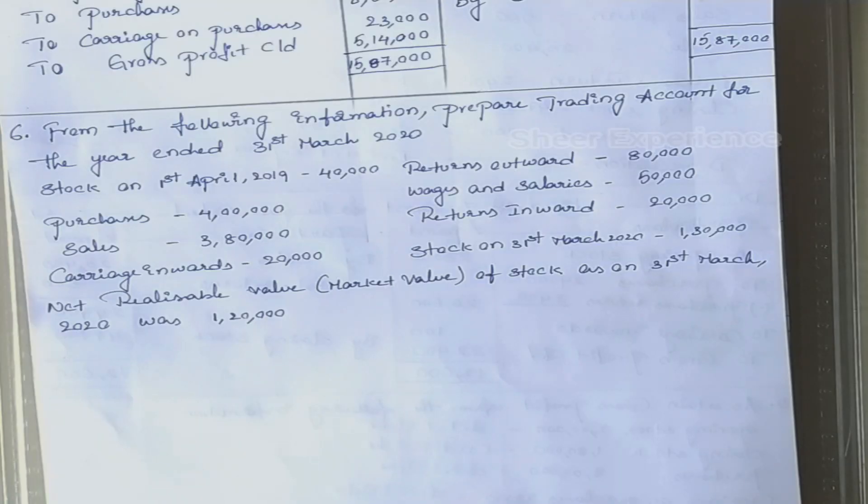Our next problem: prepare the trading account for the year ended 31st March 2020. Stock on 1st April 2019: 40,000. Purchases: 4,00,000. Sales: 3,80,000. Carriage inwards: 20,000. Returns outwards: 80,000. Wages and salaries: 50,000. Returns inwards: 20,000.